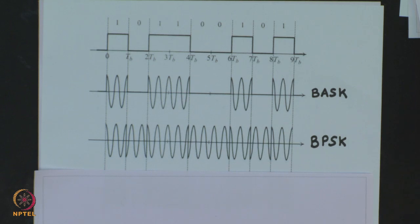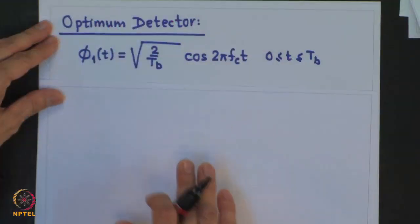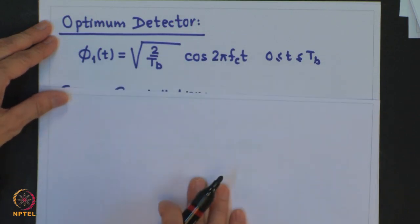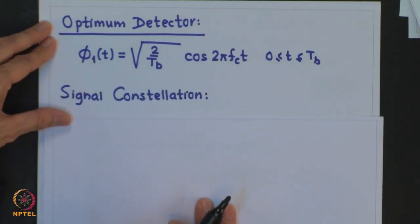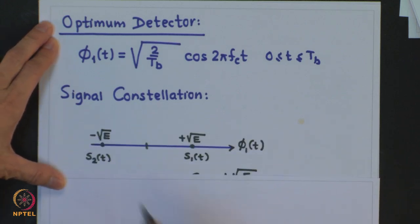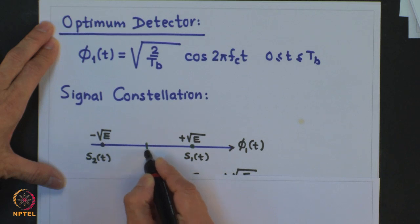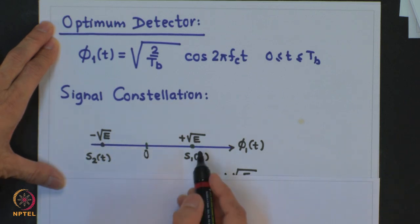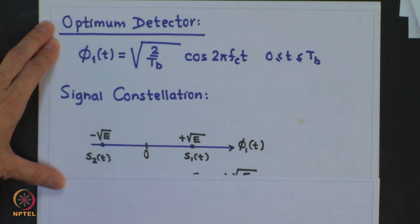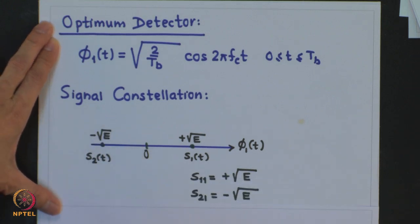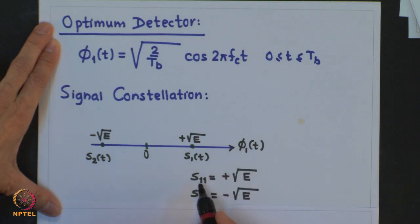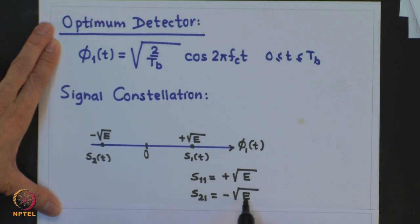It is easy to see that the signal constellation can be obtained with just one basis signal. We use phi_1(T) as the basis signal over this duration. The signal constellation is as shown: S1(T) is at one point and S2(T) at another. Taking projections of these signals onto phi_1(T), S_11 gives plus root(E) and S_21 gives minus root(E). This is a one-dimensional signal space.